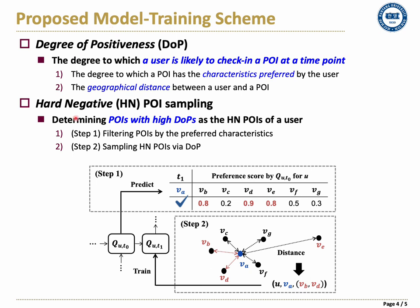Hard negative POIs are POIs that a user was highly likely to check in but did not. To find these hard negative POIs of a user, we define the degree of positiveness, DOP. We formalize DOP by considering two factors, and determine the POIs with high DOPs as the hard negative POIs of the user.